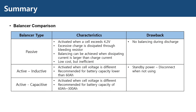Now let's summarize what we have learned. There were three types of balancer modules introduced in this video. The passive balancer is activated during charging only when a cell exceeds 4.2 volts. It achieves balancing between cells by dissipating the charge through the bleeding resistor. The cells can be fully balanced only when the dissipating current is greater than the charging current. It is low cost, but inefficient, since it dissipates excessive power.